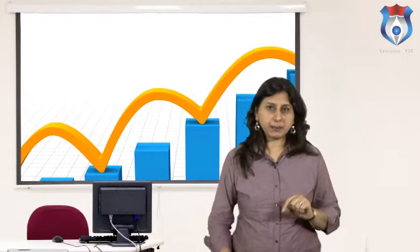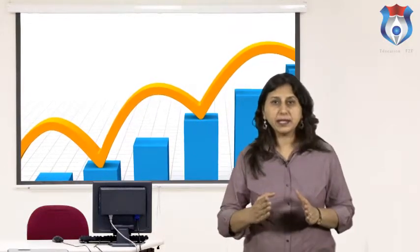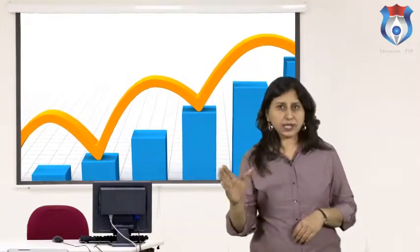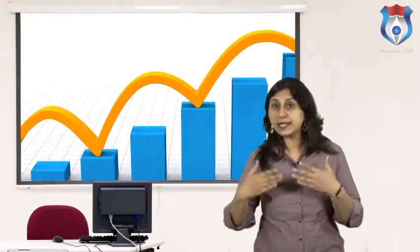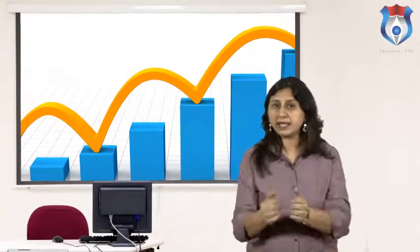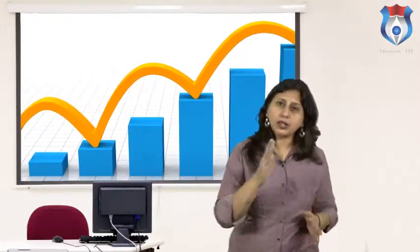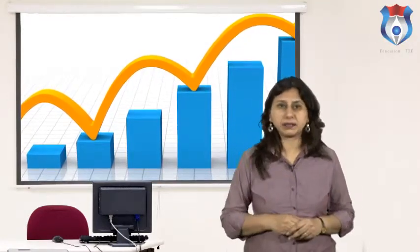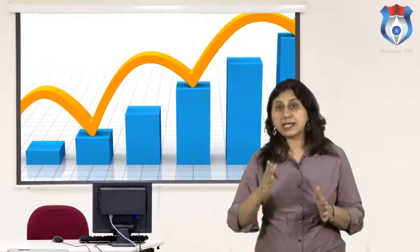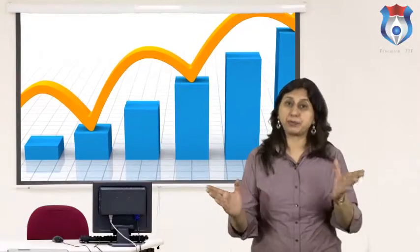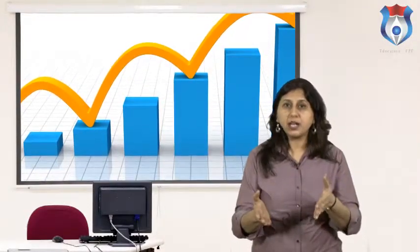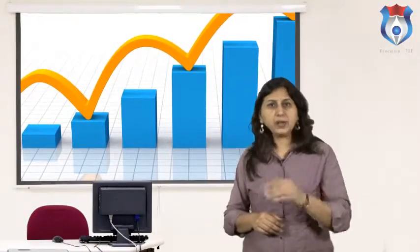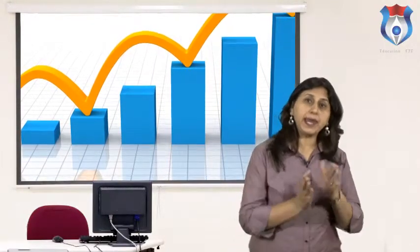The annuity method of depreciation deals with the effect of cost of capital in the calculation of depreciation. It considers that the business, besides losing the original cost of the asset, also loses interest on the amount used for buying the asset. The lost interest is the amount the organization would have earned had it been invested elsewhere. Therefore, the asset account is debited with interest, which is ultimately credited to the profit and loss account, and is credited with the amount of depreciation, which remains fixed every year. The annual amount of depreciation is determined with the help of the annuity table.